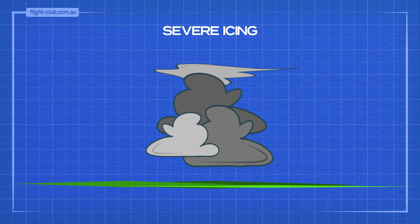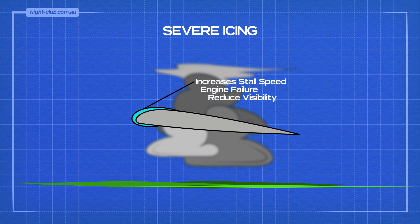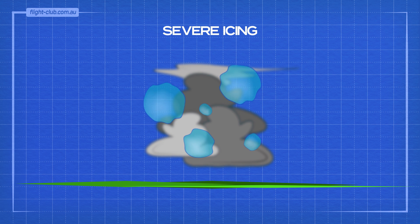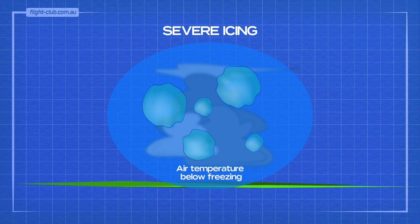Severe icing is a serious hazard to aeroplanes because it increases the stall speed, can cause an engine failure, and can reduce visibility. Thunderstorms are associated with the very dangerous clear ice that forms from large supercooled water droplets that exist in liquid form when surrounded by freezing air.